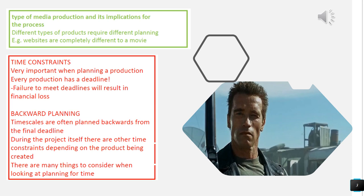Time can be a really important factor, and time constraints can be very important. For example, if you've only got three months to complete a film, that's going to be really difficult. You've got to think about whether the people in your film are going to be available — say you were making a Terminator film, you need to think about when Arnold Schwarzenegger is available. If he's only available for a certain time, that creates a big constraint. Another important time constraint is the deadline — if you fail to meet it, you're going to result in a big financial loss.